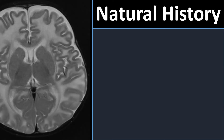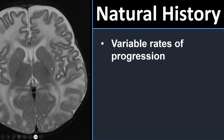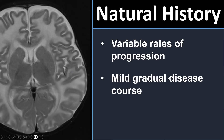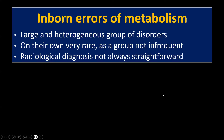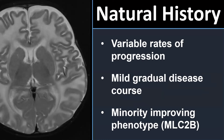Other patients can have a very mild phenotype with only mild developmental delay and cognitive complaints. Variable rates of progression, a very mild gradual disease course. And in a minority — a small group of patients who harbor a mutation in the MLC2B gene — you can even have an improving phenotype.